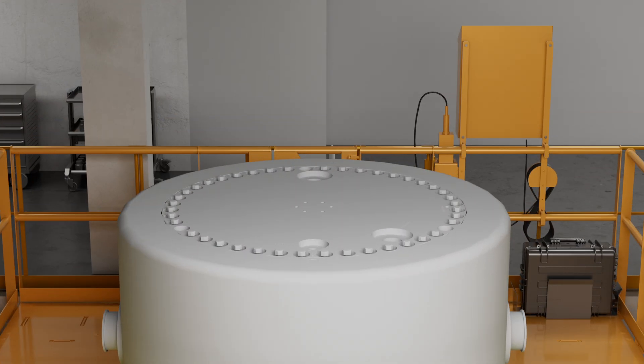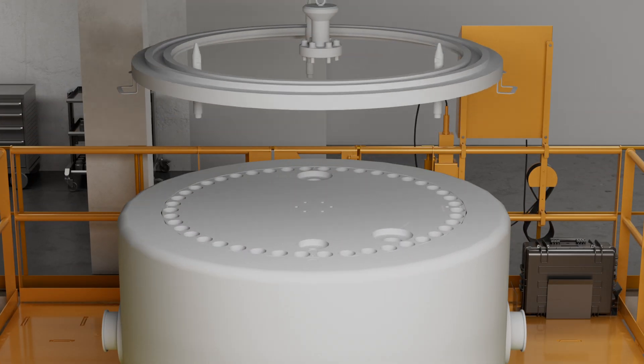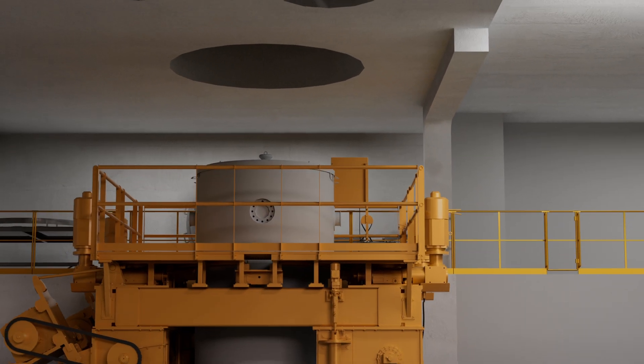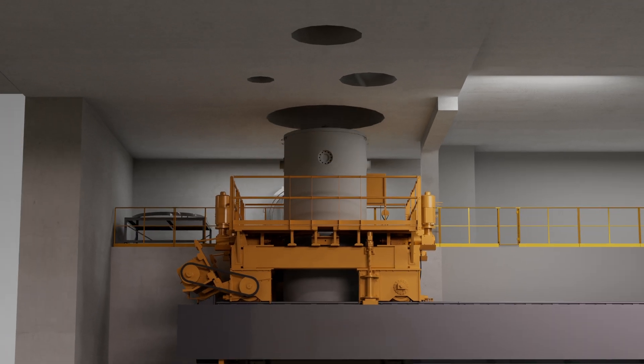The bolts on the cask lid are removed and the lid lifting device is fixed in place. The transport cask can then be docked to the transport cask docking station on the floor of the fuel handling cell.